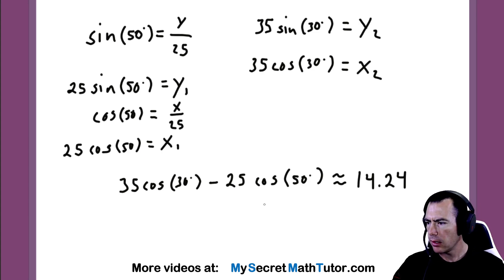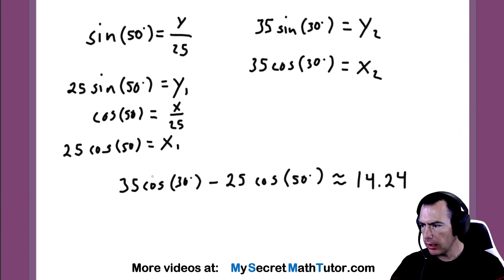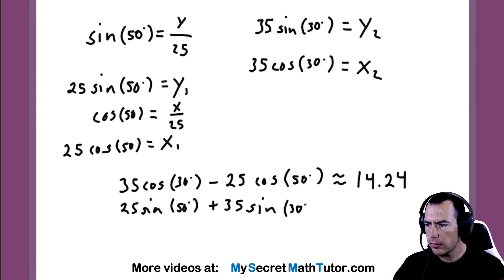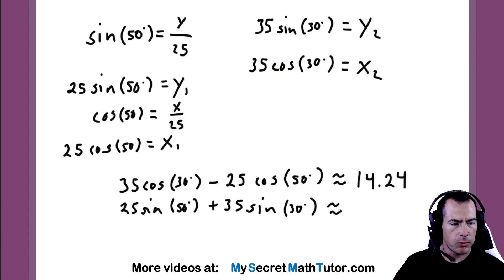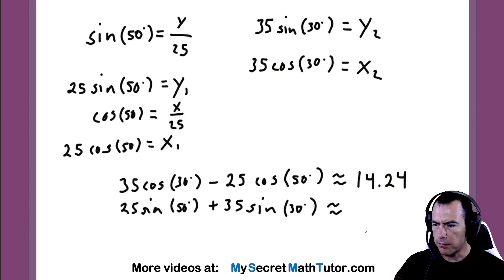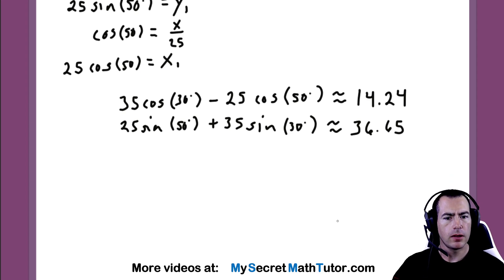Now we want to do the same thing with our y values. In this case, both y values are going up, so we'll simply add them — they're both in the positive direction. So we add 25 sine of 50 degrees plus 35 sine of 30 degrees. The value I'm getting out of here is around 36.65. So what we have here are the components of that new vector — this is the vector that results from those original two.